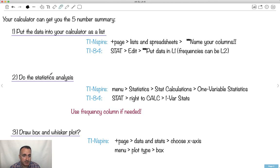Then you do the stats analysis. In the TI Inspire, you press menu and go stats and do one variable statistics. Don't forget to use a frequency column if you need to. Same for the 84, you go stat, right to calc, and you do one var stats. Use the frequency if you need to. You can actually draw the box and whisker plot if you want to. I don't think it's that important to draw it on your calculator. You have to be able to draw it by hand.